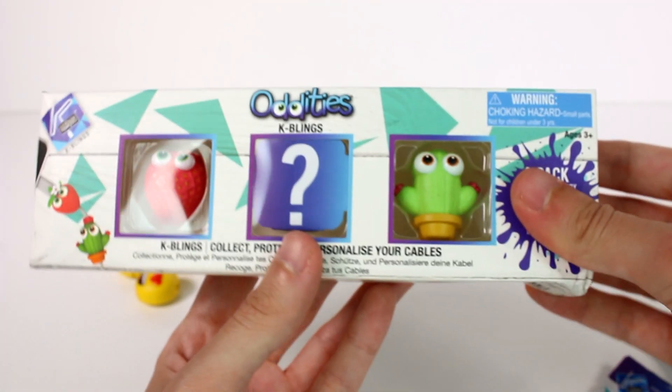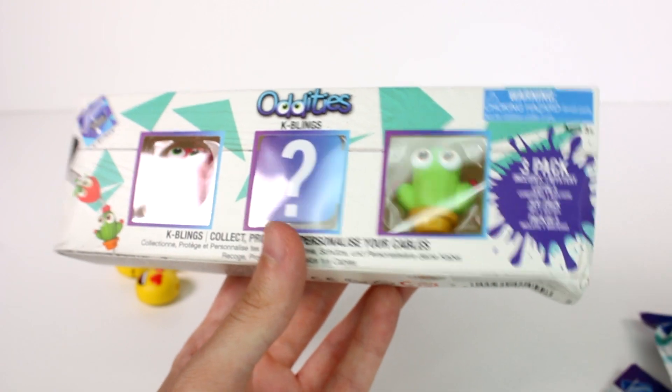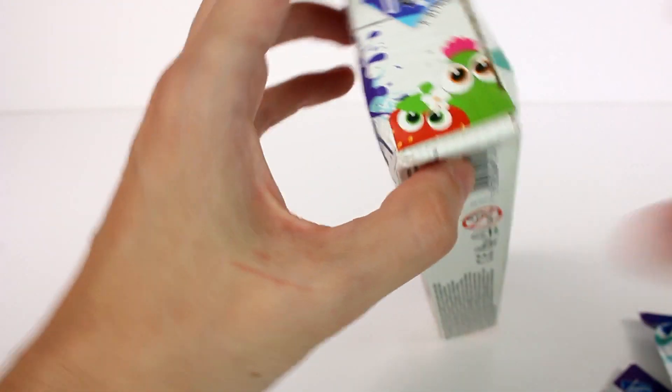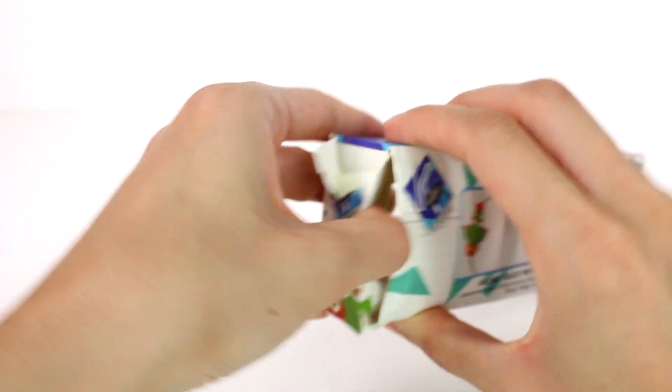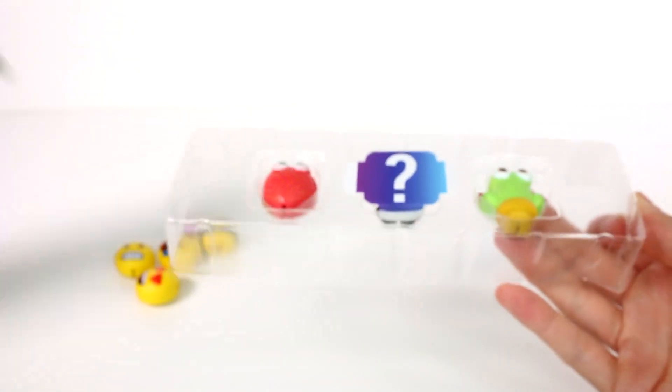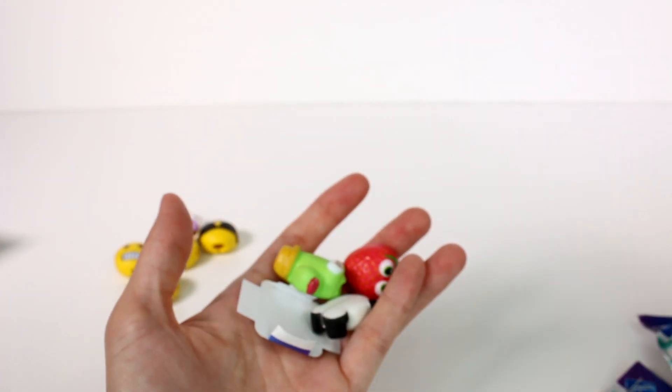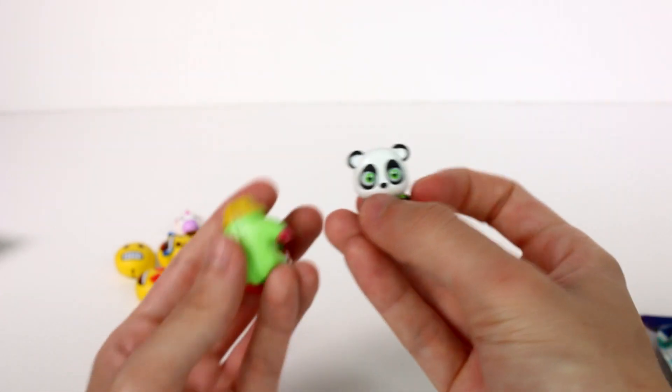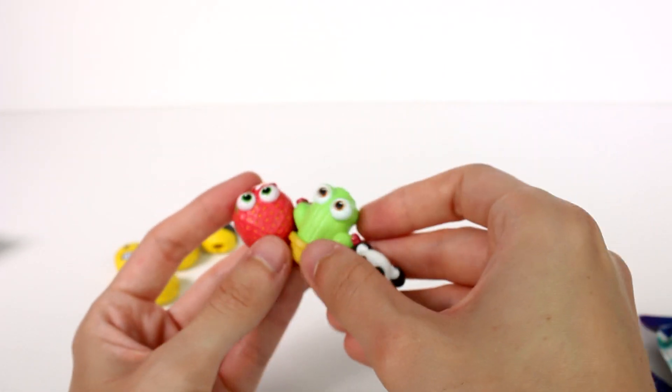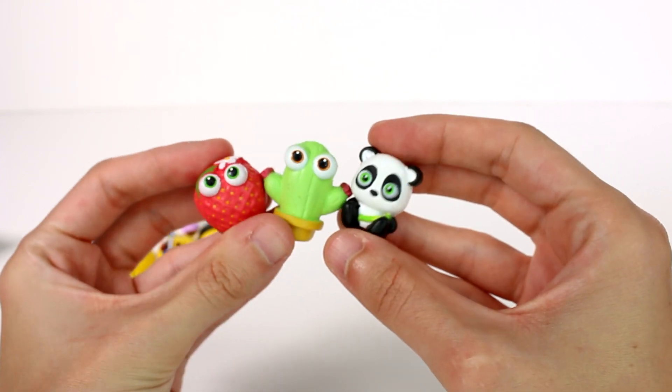Now we are going to move on to the oddities. Let's see what we have. We obviously have the cactus and the strawberry. We're spoiling it now. We have the panda as our hidden one. So we have a cactus, a strawberry, and a panda. How cute are these though?